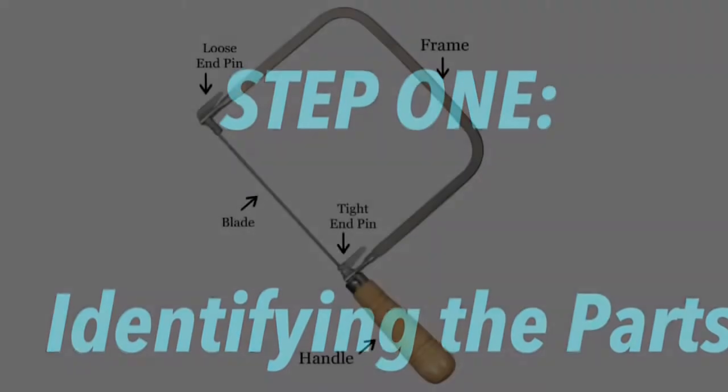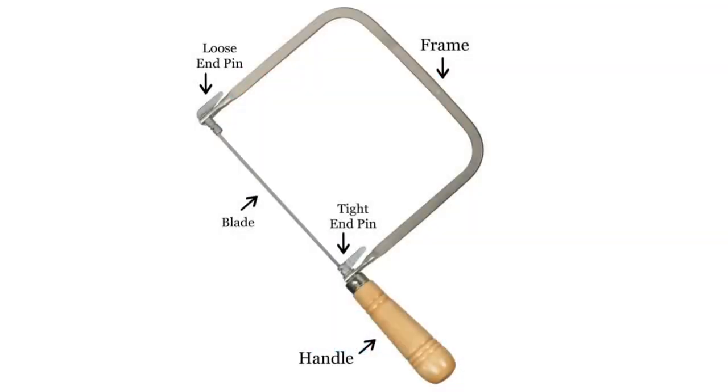Step one, identifying the parts. Your average coping saw looks like this. It has a wooden tapered handle,